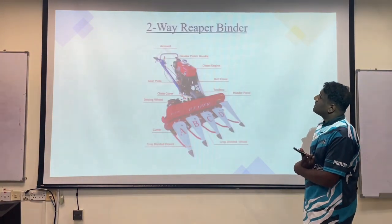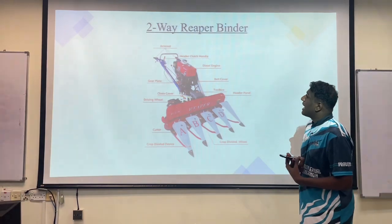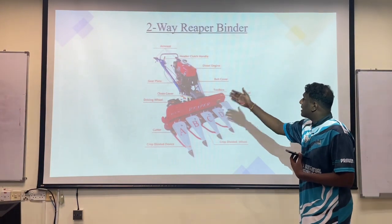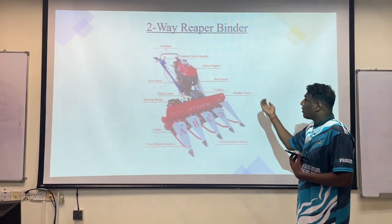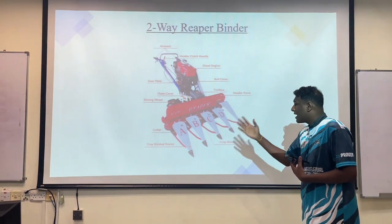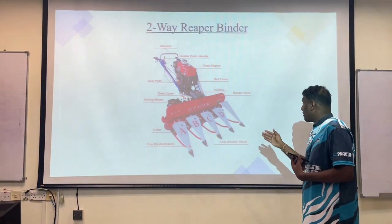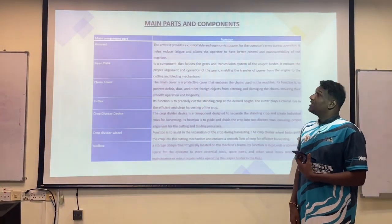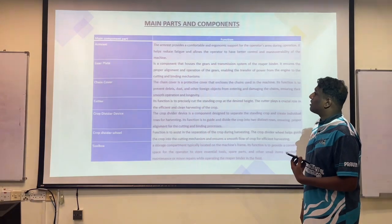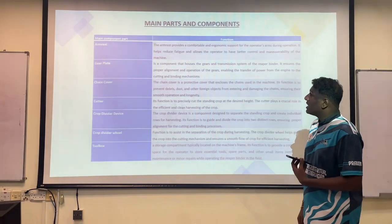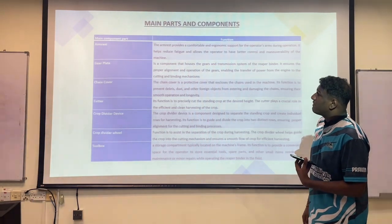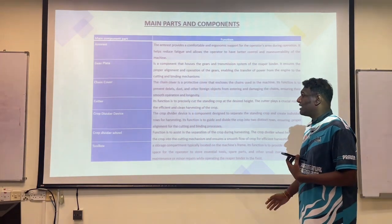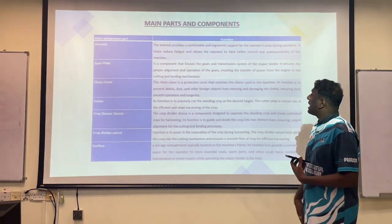This is the two-way reaper binder. It consists of an armrest, header, clutch handle, diesel engine, gear plate, belt cover, chain cover, toolbox, driving wheel, header panel, cutter, crop divider device, and crop divider wheel. These are the main parts and components of the two-way binder machine: armrest, gear plate, chain cover, cutter, crop divider device, crop divider wheel, and toolbox, along with their respective functions.